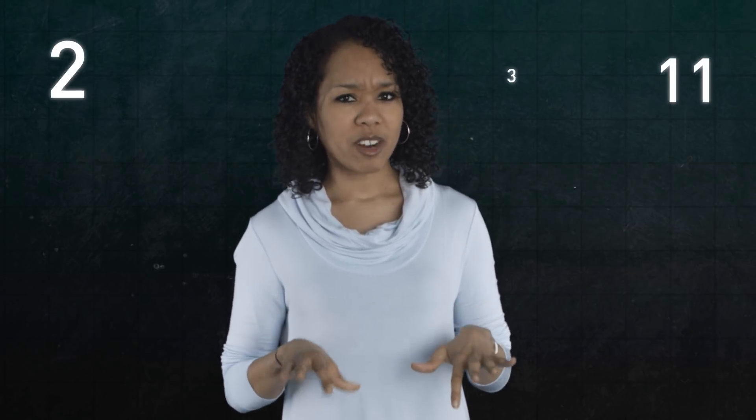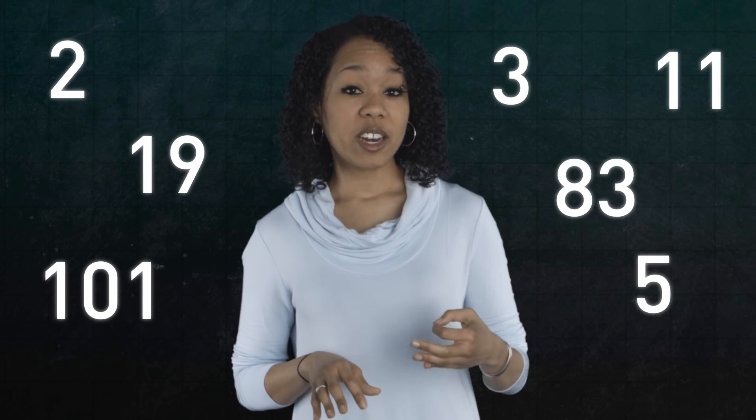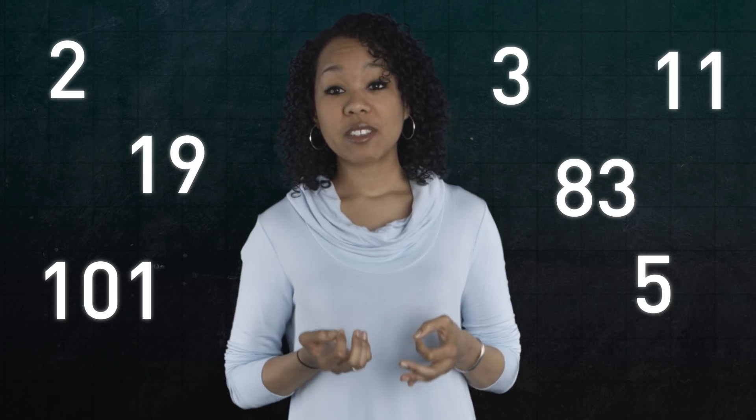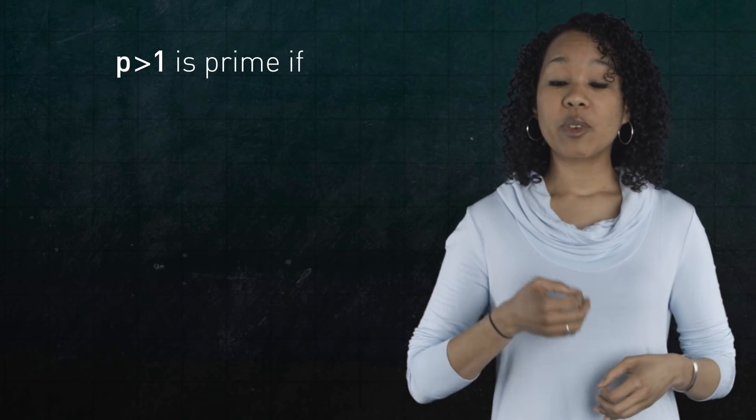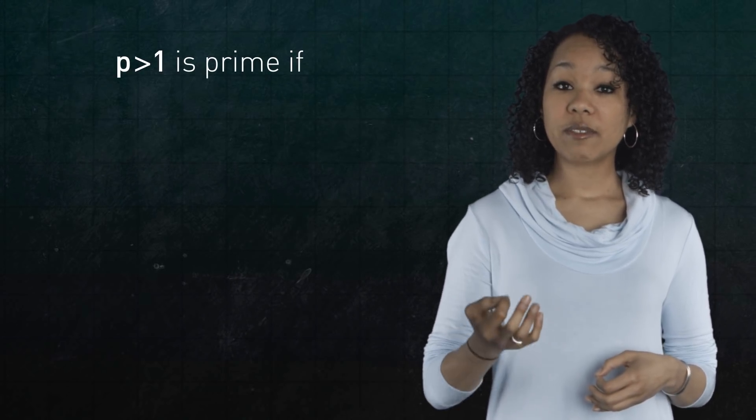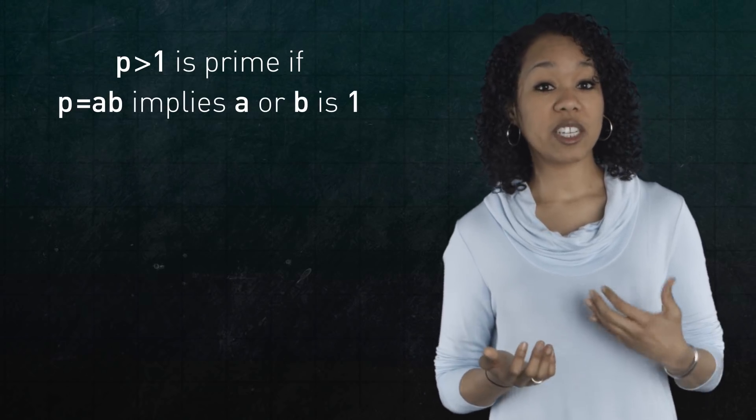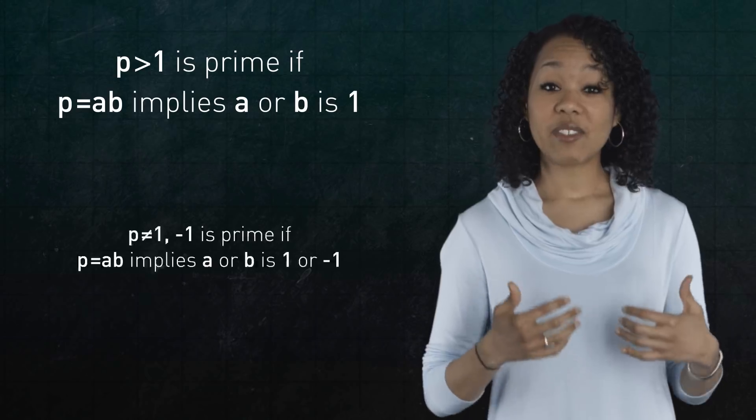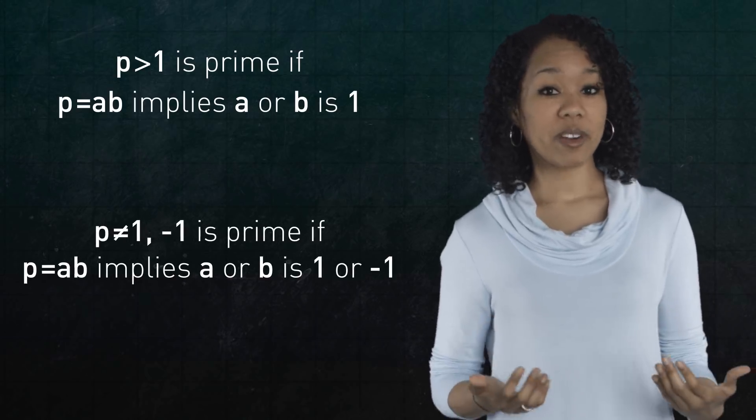The mystery surrounding Fermat's last theorem may have to do with the way we understand prime numbers. You all know what prime numbers are. An integer greater than 1 is called prime if it has exactly two factors, 1 and itself. In other words, p is prime if whenever you write p as a product of two integers, then one of those integers turns out to be 1. In fact, this definition works for negative integers too. We simply incorporate negative 1.